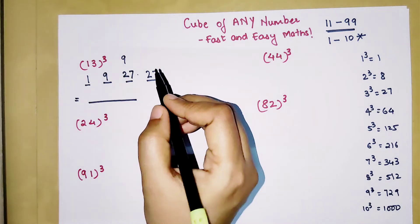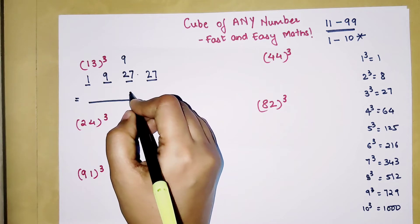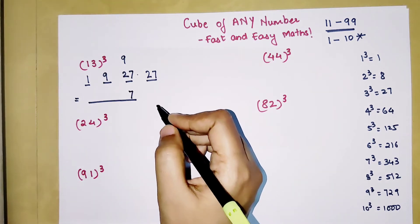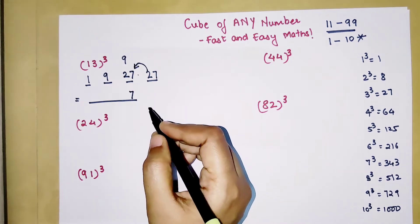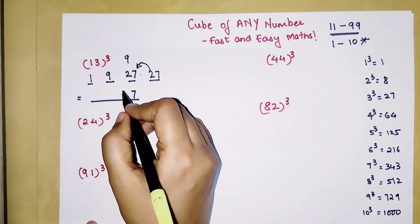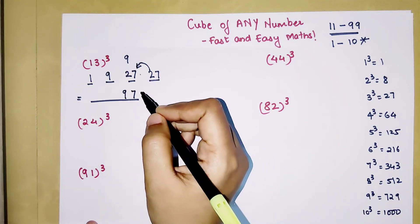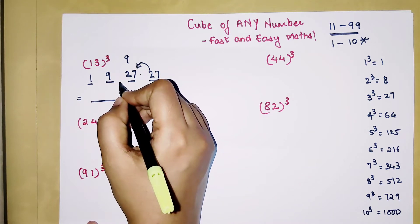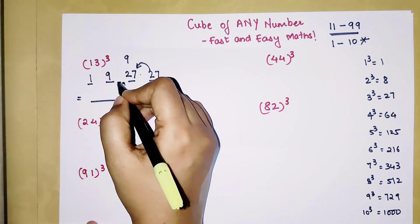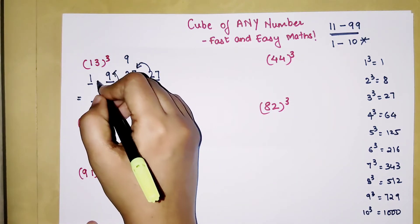So now to get your final answer, you will just focus on the unit digit. So here your unit digit is 7. That's going to be the last digit of your answer. Now what happens to this 2 it gets added to 27. So 27 plus 2 gets you 29. So 9 will be taken and 2 will be added to 9. So 9 plus 2 is going to get you 11.